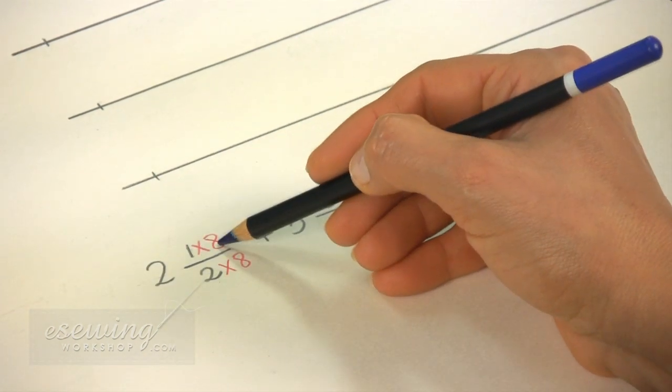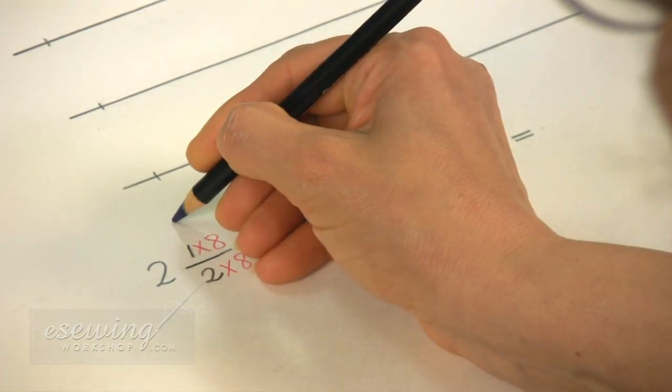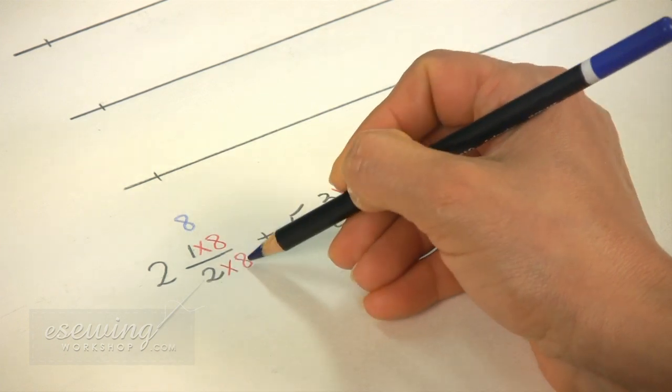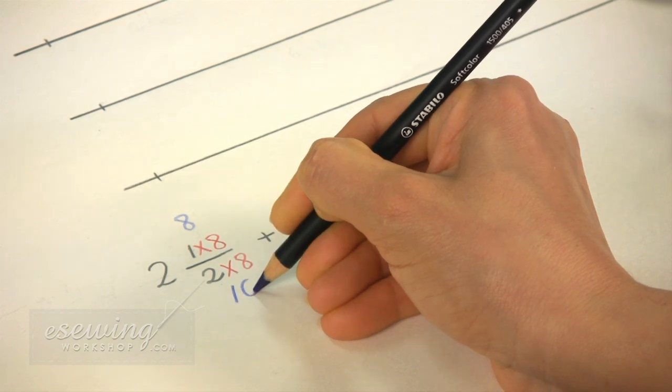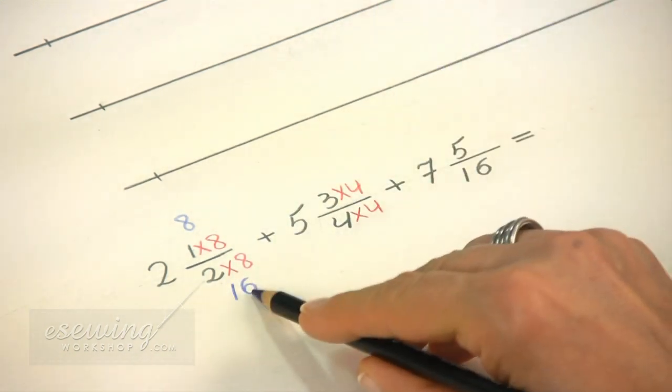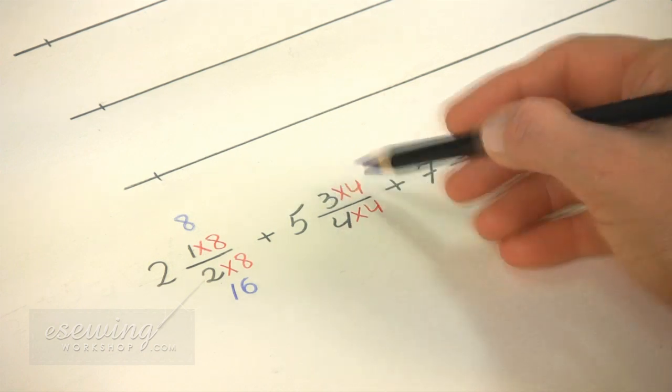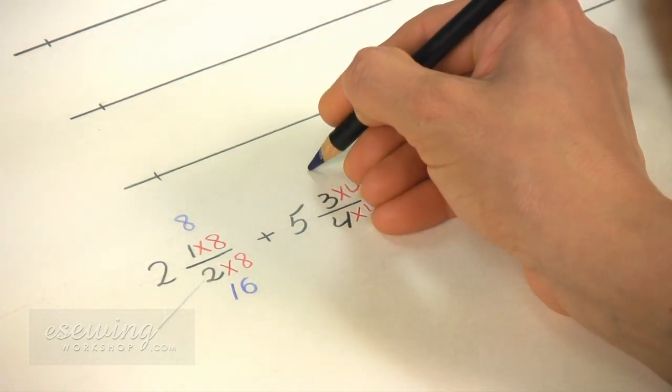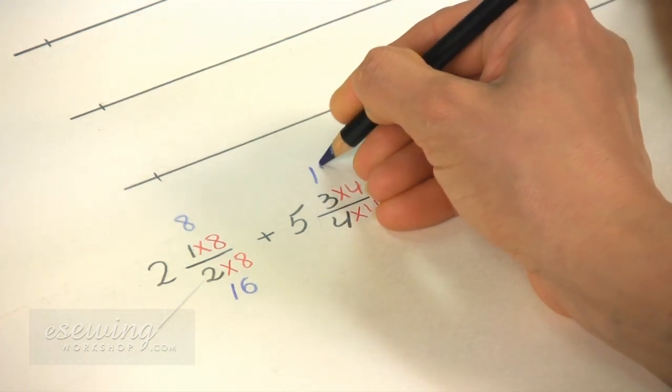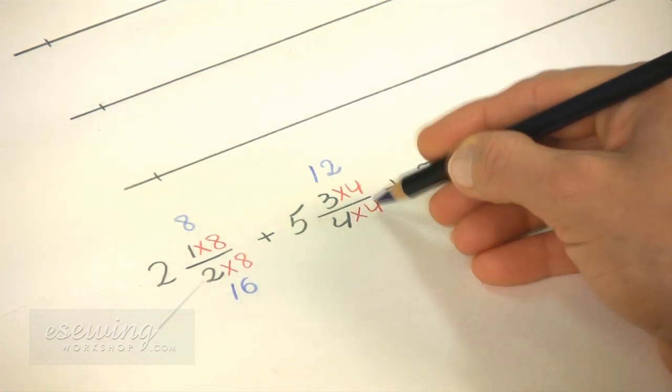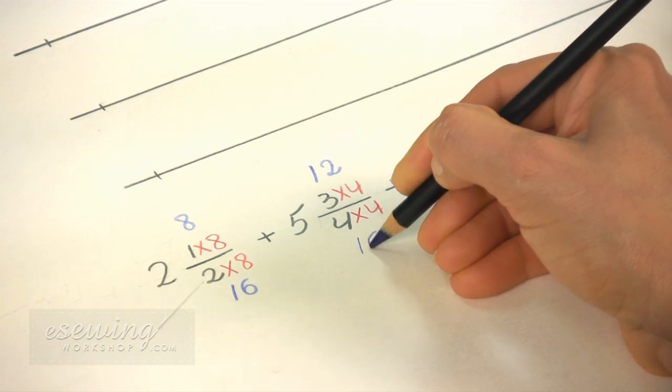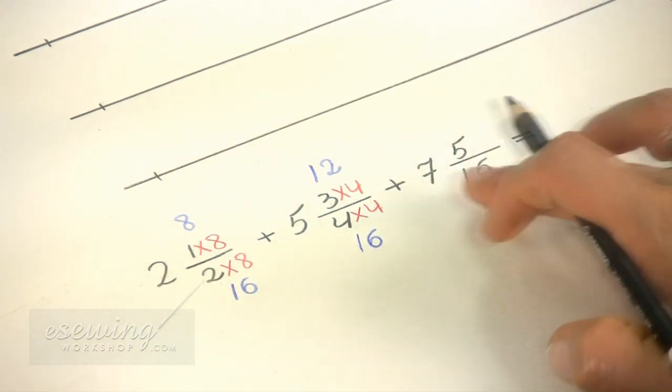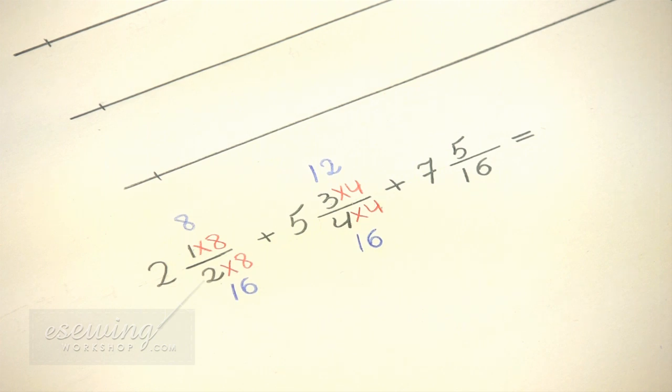1 times 8 is 8. 2 times 8 is 16, just like this denominator. 3 times 4 is 12. And 4 times 4 is 16.